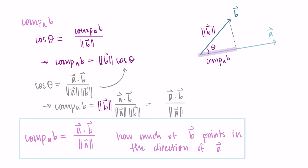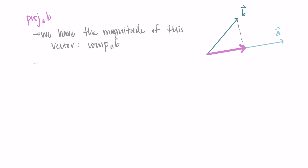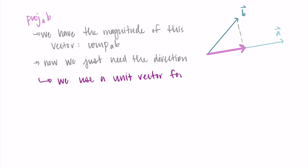Note that a·b is a scalar and so is |a|, so the whole thing is just a number — the amount of b that points in the direction of a. Now for the vector projection of b onto a, we already have the magnitude, which is the component of b along a. The only thing we need now to define the vector is its direction, and we get a vector pointing in a specific direction by taking the unit vector in the direction of a.